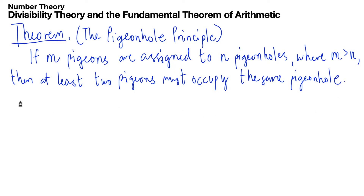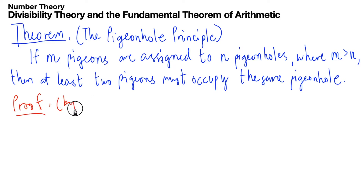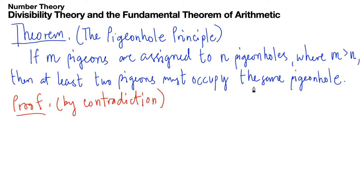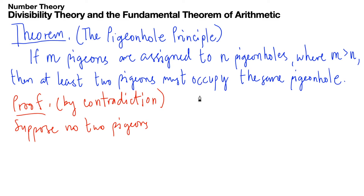Let's prove this by contradiction. Suppose the conclusion is false — that is, suppose no two pigeons occupy the same pigeonhole.